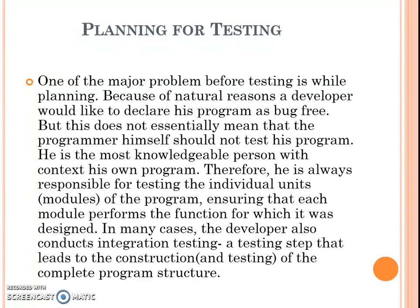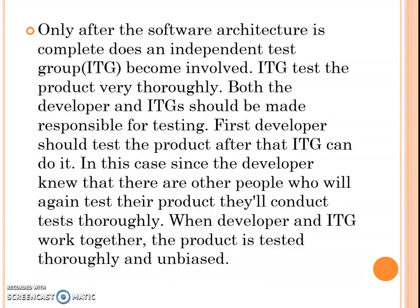In many cases, the developer also conducts integration testing, a testing step that leads to the construction of the complete program structure. Only after the software architecture is complete does an independent test group, ITG, become involved. ITG tests the product very thoroughly. Both the developer and the ITG should be made responsible for testing. The developer should test the product first, and after that, ITG can do it. Since the developer knows that there are other people who will again test their product, they will conduct tests thoroughly. When developer and ITG work together, the product is tested thoroughly and unbiased.